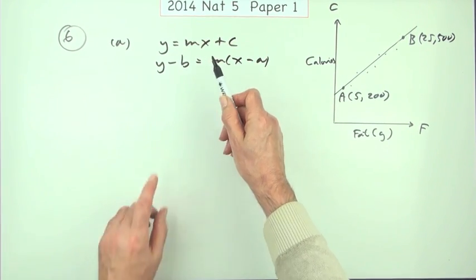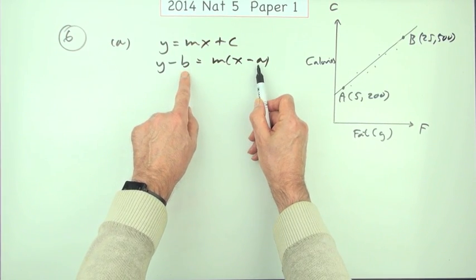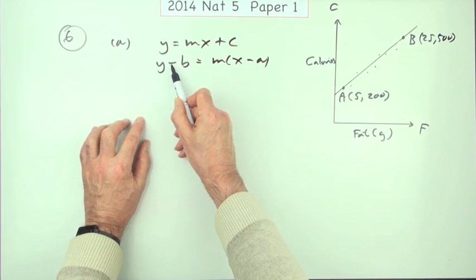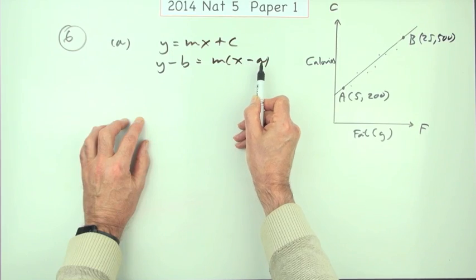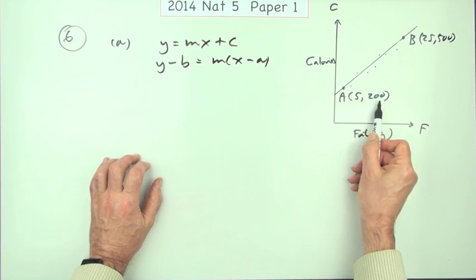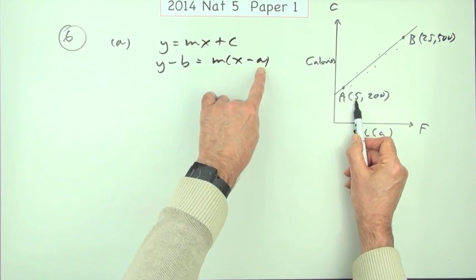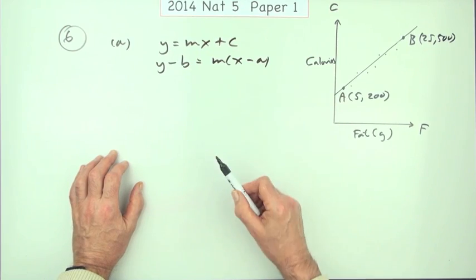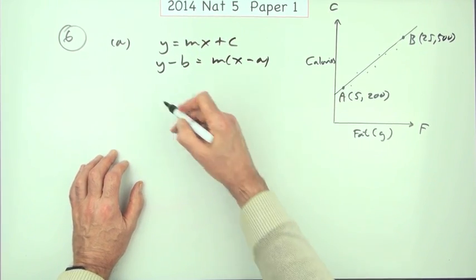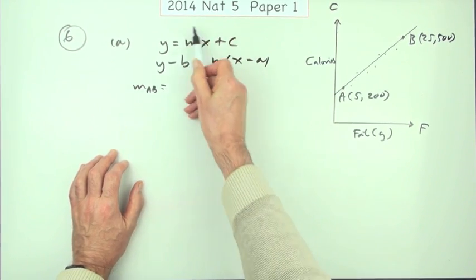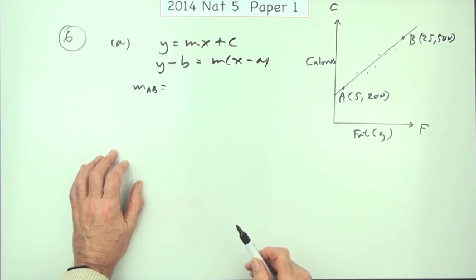But before I can put them in, because after all, the A and the B just stand for the X coordinate and the Y coordinate. Y minus the Y coordinate, X minus the X coordinate of any point that lies on the line. So the choice of these two, A could be 5, B could be 200, or A could be 25, B could be 500. It'll make no difference, I'll get the same answer, but I'll need to work out the gradient first of all. What's the gradient of the line AB? Even if I was doing it the first way, I'd have to get the gradient first.